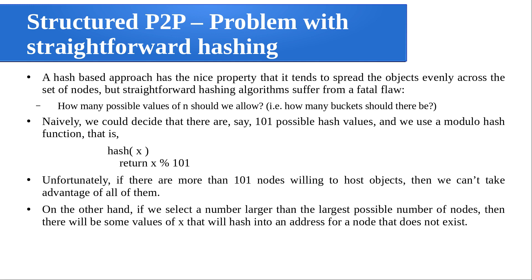On the other hand, if you select a number larger than the largest possible number of nodes — say initially there are only 101 machines, but in future 200 machines may come — and you take Modulo 200 instead, you will be getting values from 0 to 199. But for the time being you are having only 101 addresses. So what are you going to do with values greater than 101? That initial estimation is something important. It becomes a kind of static allocation — you can't make nodes dynamically come and go.